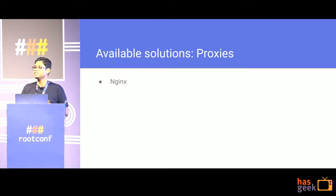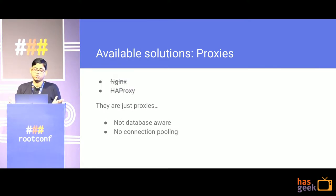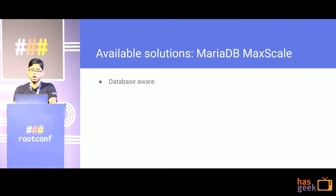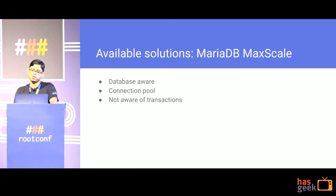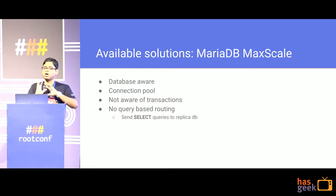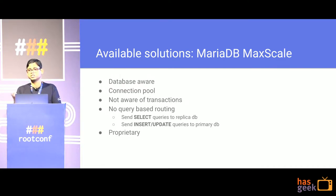We looked at Nginx and HAProxy first, but we realized they are just proxies — not database-aware and don't have connection pooling. Then we hit MariaDB MaxScale. It is database-aware and has connection pooling, but it is not transaction-aware and doesn't support query-based routing — where you define rules like routing all reads to replicas and writes to the primary. On top of that, it is proprietary, and at Zapier, we prefer open source applications.